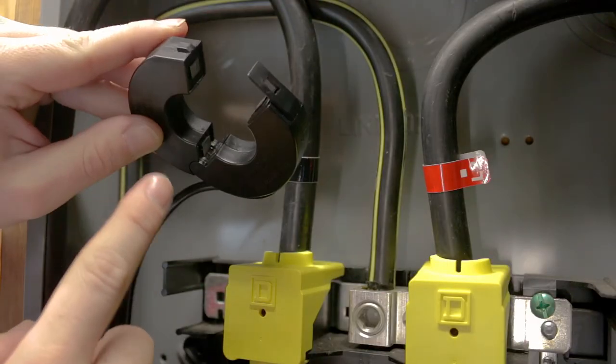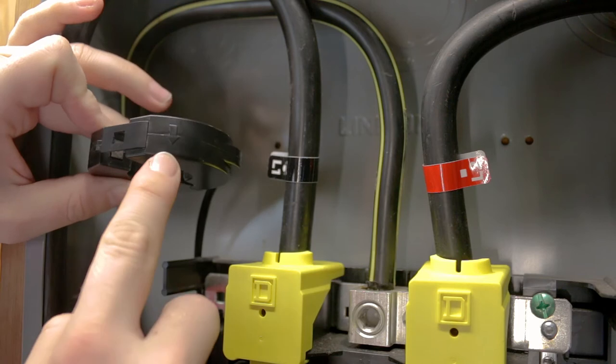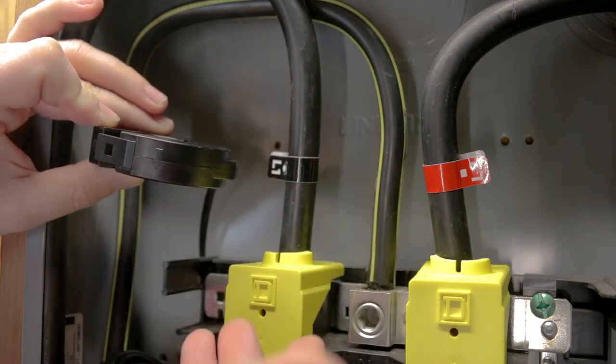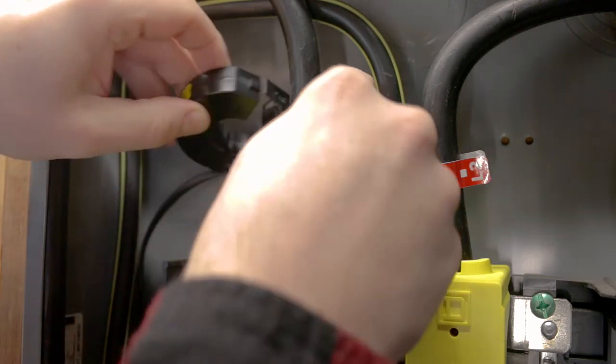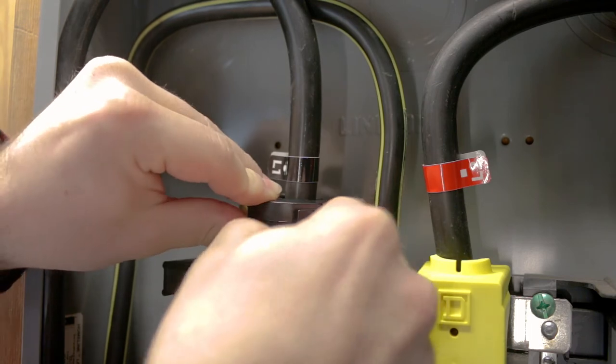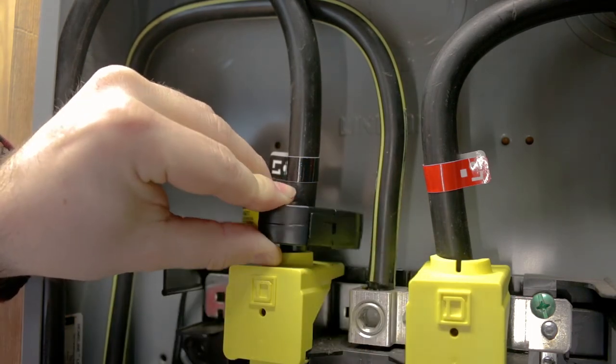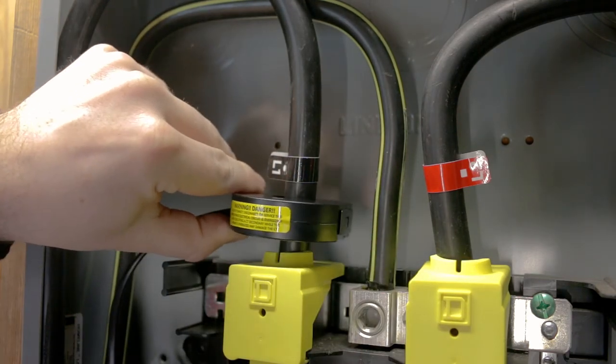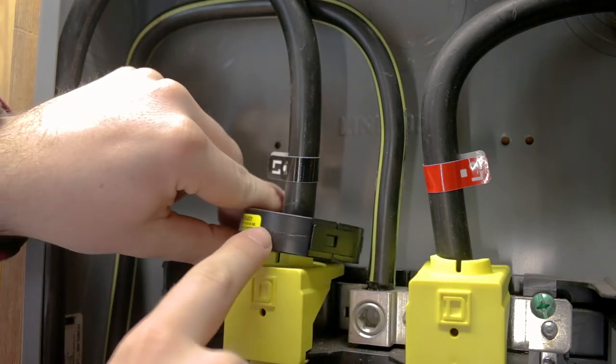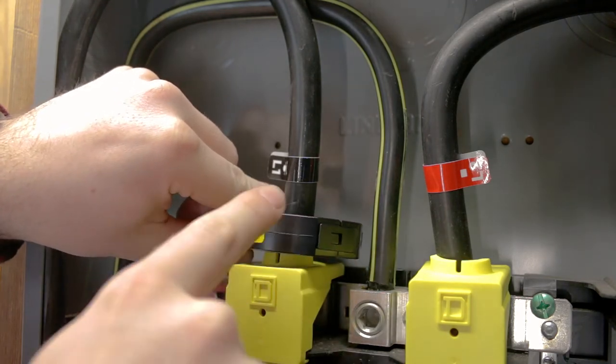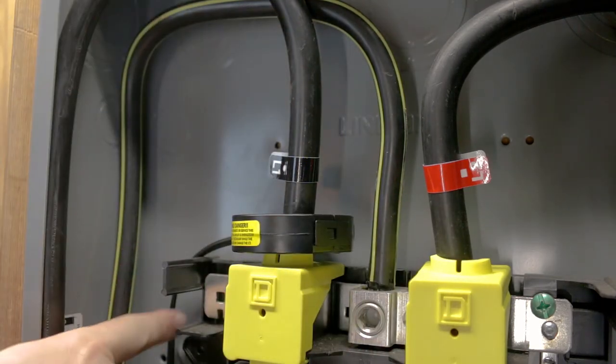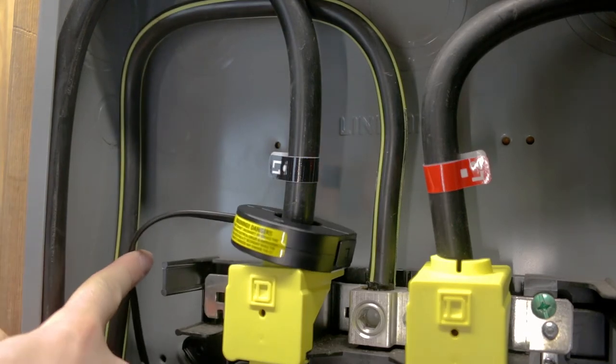So we have our CT right here, and you can see we have our arrow pointing down towards our load or our electrical panel. We're just going to slip this right over our lead coming in here and snap it into place. That's all we need. Now you'll notice that this is loose like this, that is okay. You just want to make sure, like I said before, that you put a zip tie around this to hold the CT closed. We'll take our wire and just route it over here to the side, securing it and just coming down with it to our conduit.